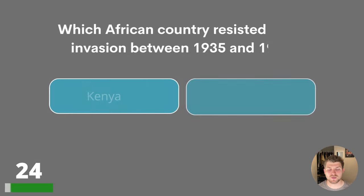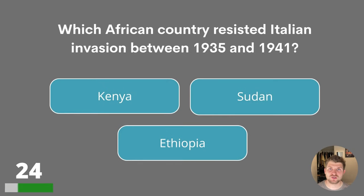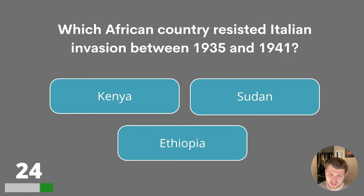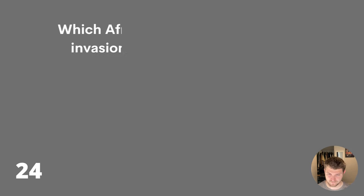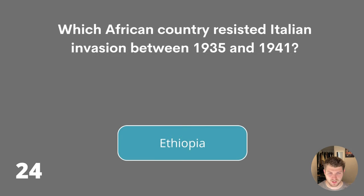Question twenty-four. Which African country resisted Italian invasion between 1935 and 1941? Kenya, Sudan or Ethiopia? The answer is Ethiopia.